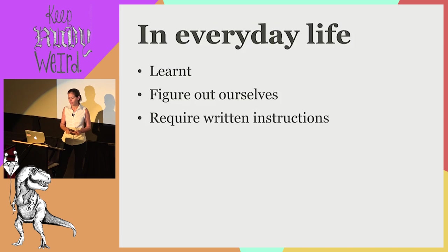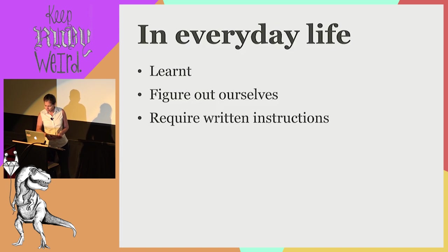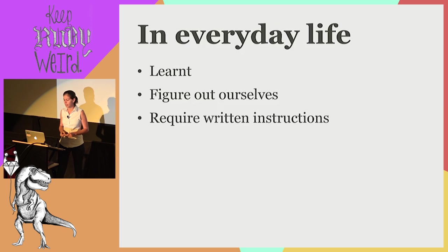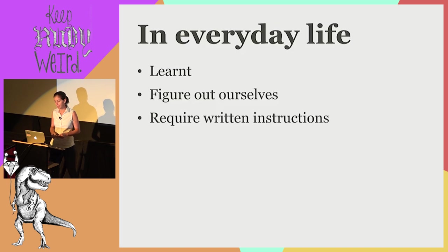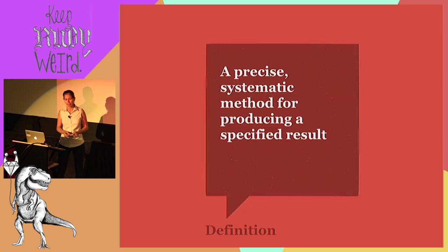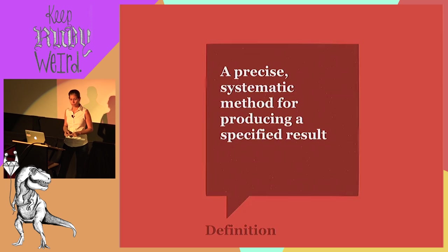In everyday life we have algorithms that are unlearned, like arithmetic; some that we figure out ourselves, like looking up a dictionary definition; and others that are written instructions, like recipes, driving directions, or everybody's favorite — assembling IKEA furniture. We can define an algorithm in one sentence: it's a precise, systematic method for producing a specific result.